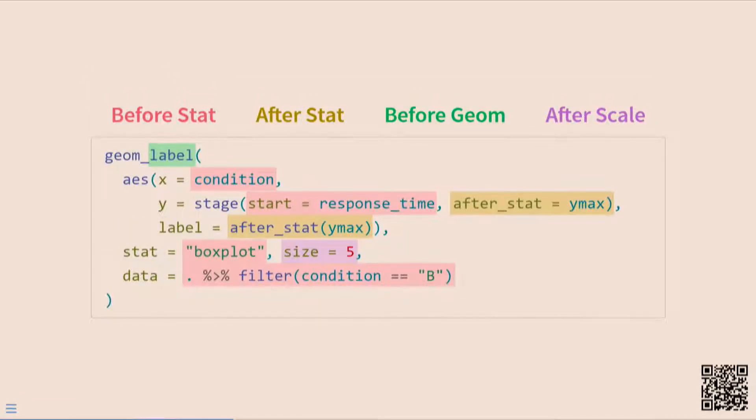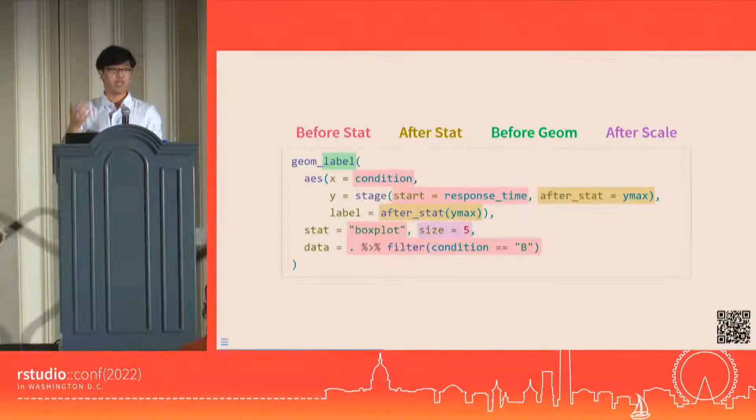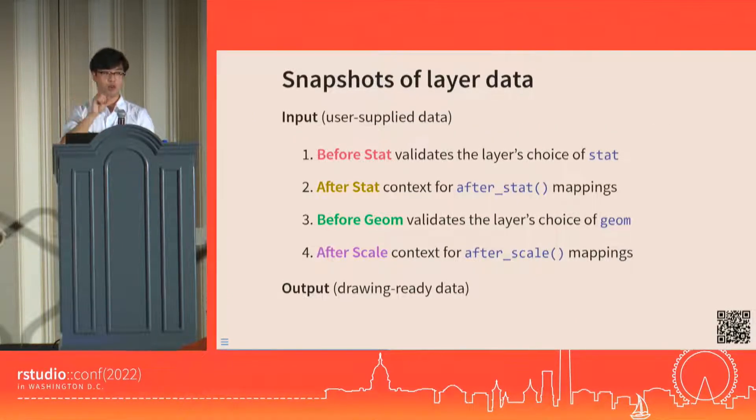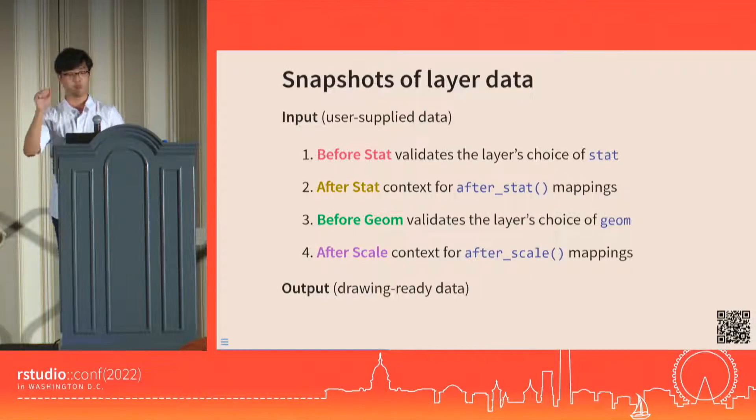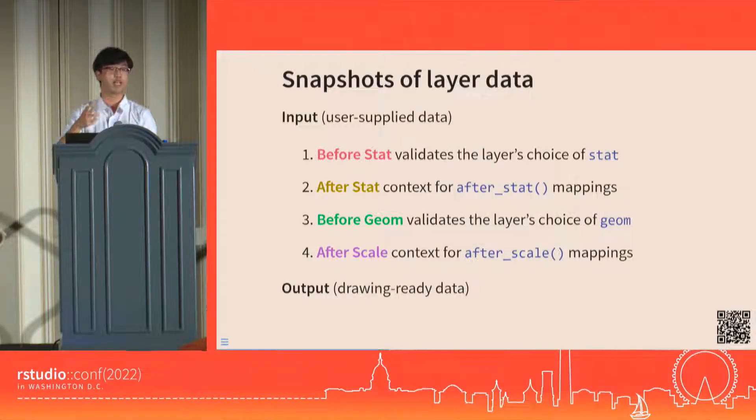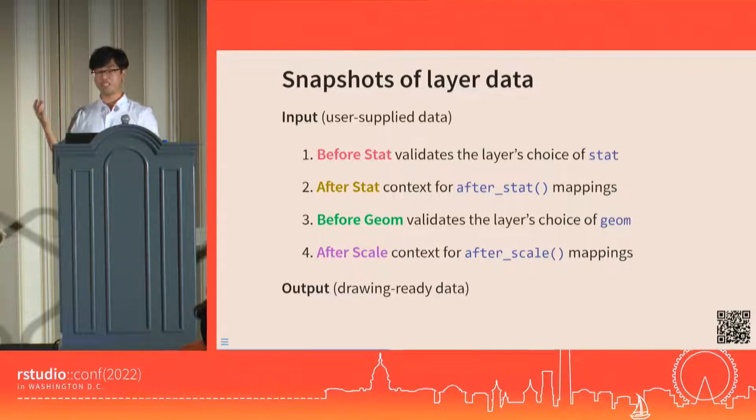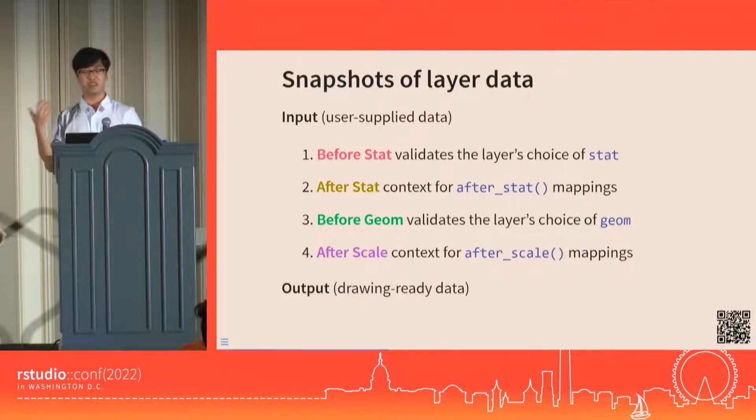I'm simplifying things a bit here, but for our purposes as users, we can think of the internals as divided up or sliced into these four big steps, which I'll call the before stat, after stat, before geom, and after scale. Because they happen in order, how a piece of our layer code changes the current state of the data in this pipeline at one step has consequences for what kind of code we can write for that data in another step. So far so good? Now we just need to see what the data actually looks like at these steps.